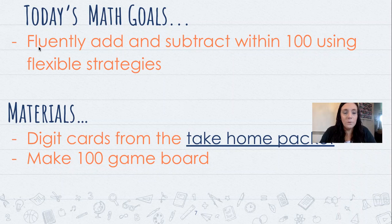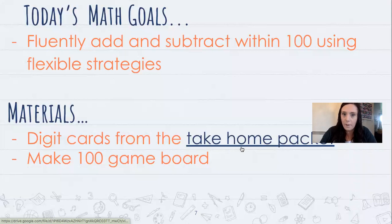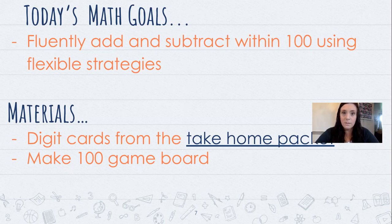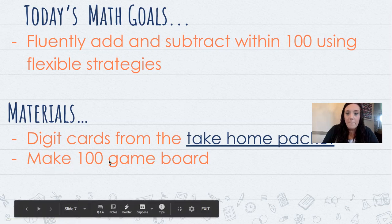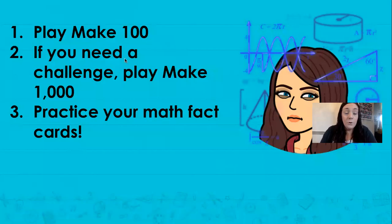For math, your goal is to fluently add and subtract within 100 using flexible strategies — the strategies that we learned earlier in the year. The materials you're going to need are the digit cards from the take-home packet. In the front it has reading resources, and in the back it has math resources. Find the digit cards, which are just number cards, cut them up, and keep them because you're going to use them for different lessons. If you can't find your take-home packet, I've linked one right here. You're also going to need the Make 100 game board. In math today, your first thing is to play Make 100. If you need a challenge, you're going to play Make 1000, and then after that, you're going to practice your math fact cards.